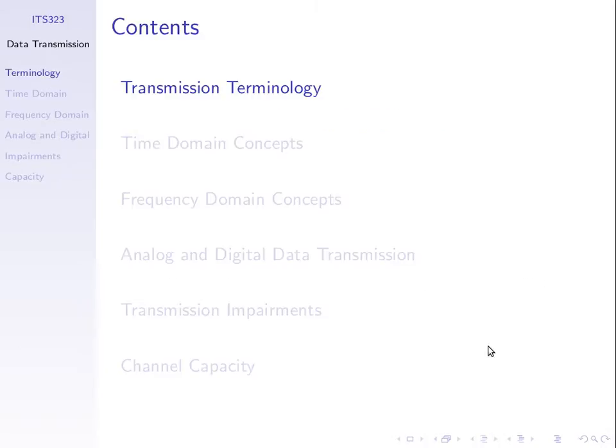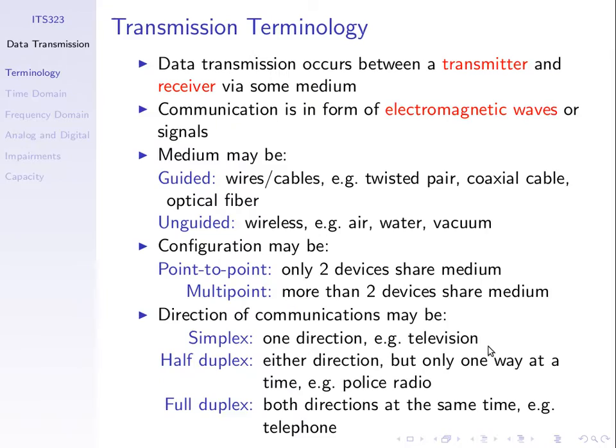Data transmission. Let's first introduce some simple terminology. We're focusing on a single link. There's a transmitter and a receiver. We want to get data from the transmitter to the receiver across some link, or generally we'll say across some medium — the thing between the transmitter and receiver.